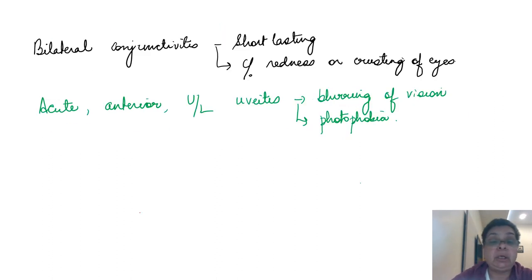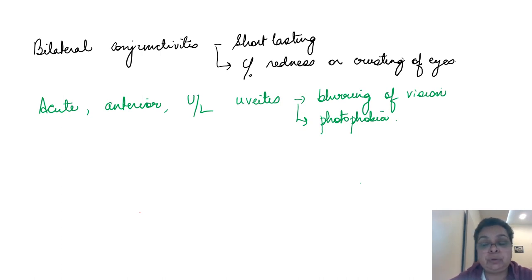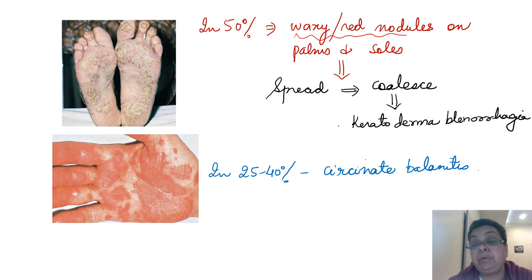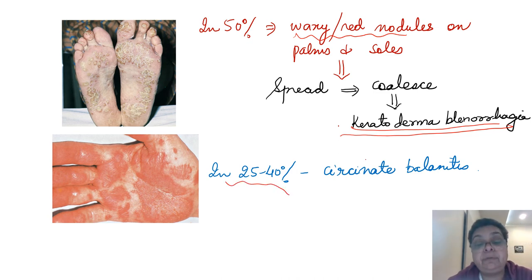The third manifestation is conjunctivitis, which is generally bilateral and short-lasting. The patient has redness or crusting of the eyes, especially in the morning, and sometimes associated acute anterior uveitis — usually unilateral — with blurring of vision or photophobia. In 50% of cases, on the palms and soles the patient may have waxy or red nodules that gradually spread and coalesce — that manifestation is called keratoderma blenorrhagica. In about 25 to 40% of patients there may also be circinate balanitis.